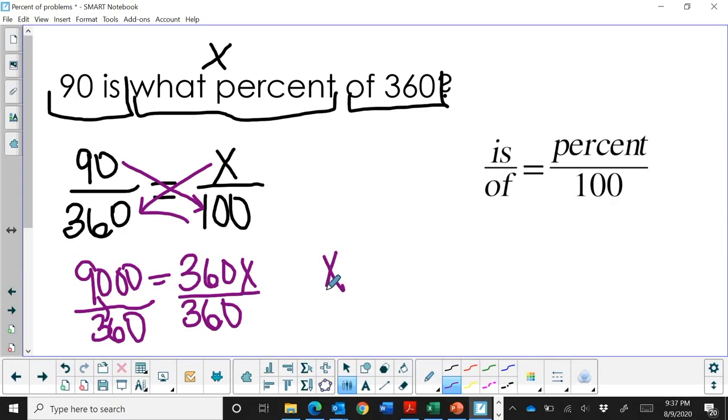So x is equal to 25. So what does that mean? That means 90 is 25% of 360.